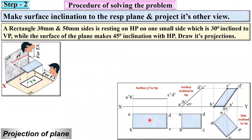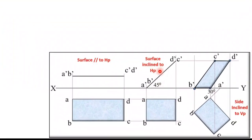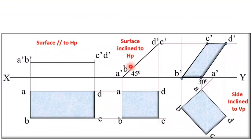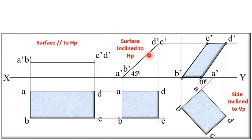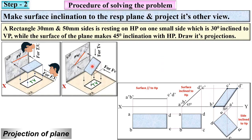This is the first stage already discussed. In the second stage, the surface is inclined to HP. Keep in mind: if in the first stage the surface is parallel to VP, then in the second stage it must be inclined to HP. The front view becomes a straight line, and the top view is a rectangle but slightly shorter than the original.